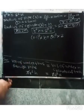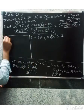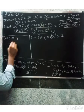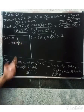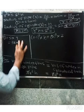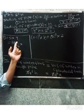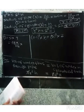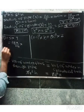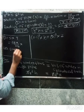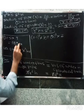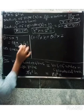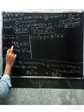Distance equals speed into time. The speed given in the question is 3 kilometers per hour. We need to find the time, so let time be x hours. So distance equals 3 kilometers per hour into x hours.